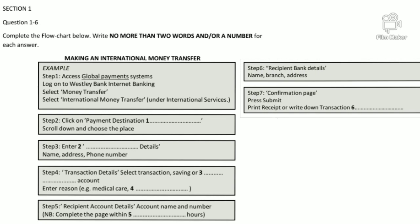You will see that there is an example that has been done for you. On this occasion only, the conversation relating to this example will be played first. Wesley Bank, how can I help you? Oh hi, I want to know how to send money to my family overseas. No problem — if you have access to the internet I can guide you through the process of how to use our global payment system.